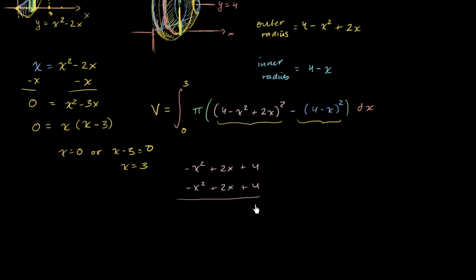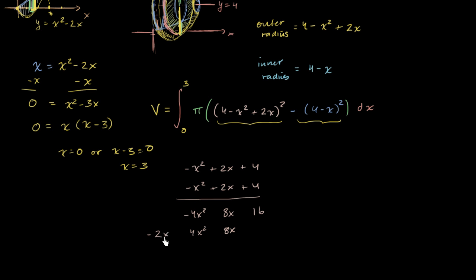So 4 times 4 is 16. 4 times 2x is 8x. 4 times negative x squared is negative 4x squared. Then 2x times 4 is 8x. 2x times 2x is 4x squared. And then 2x times negative x squared is negative 2x to the third power.